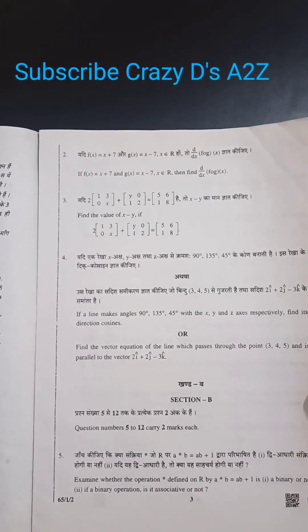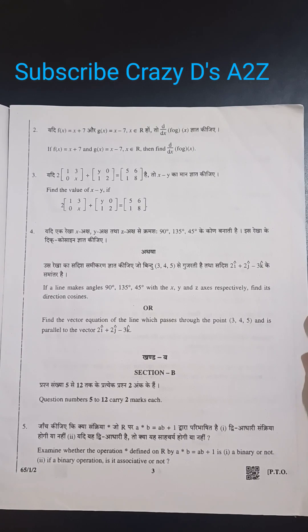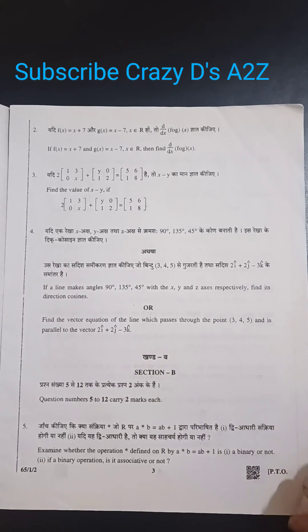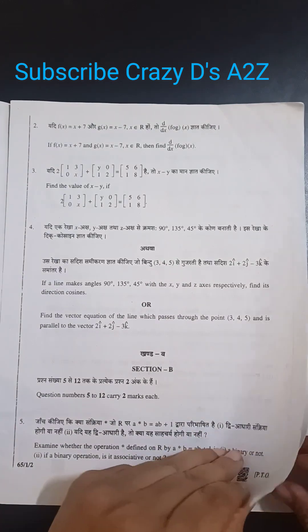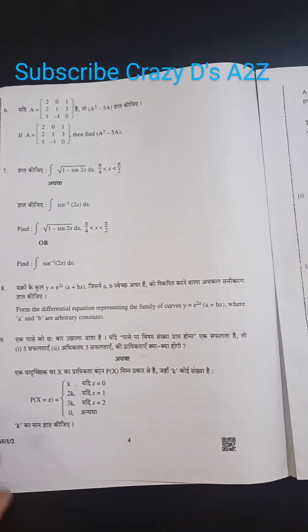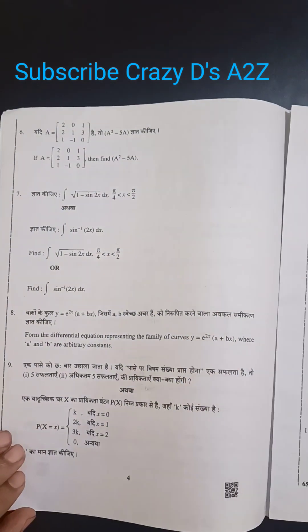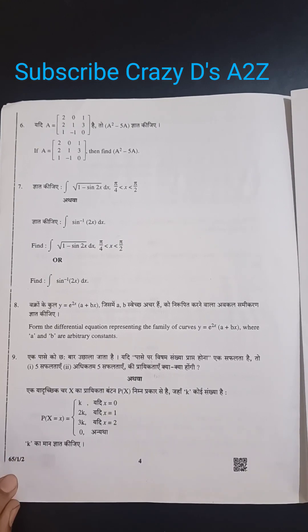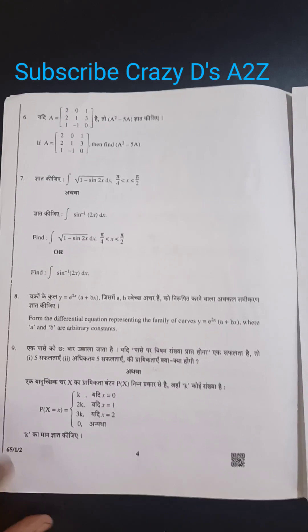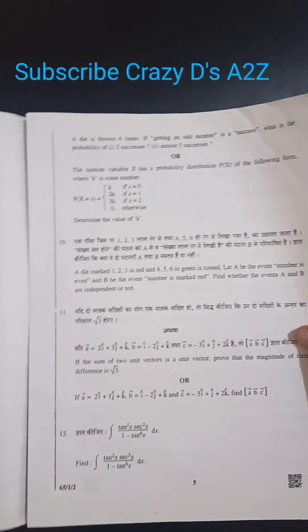So in this, questions are from question number 2 to question number 5. Then comes the next page. In page number 4, you can see questions are from 6 to 9. In page number 5, questions come from 10 to 12.